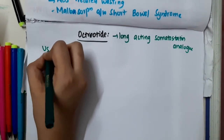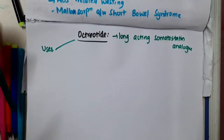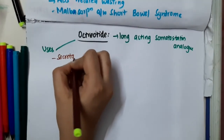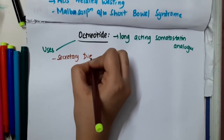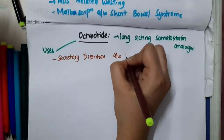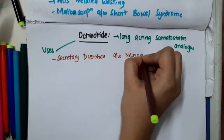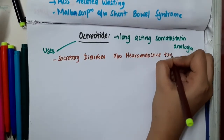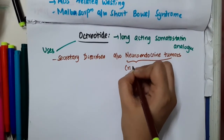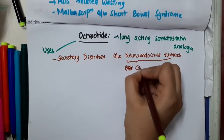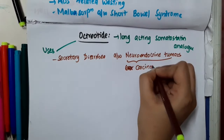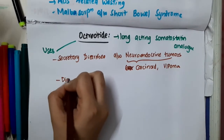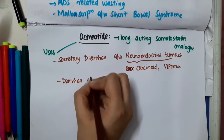What are the uses of octreotide? Octreotide is used in secretory diarrhea associated with neuroendocrine tumors like carcinoid. It is used in carcinoid syndrome and it is used in VIPoma (WDHA syndrome).